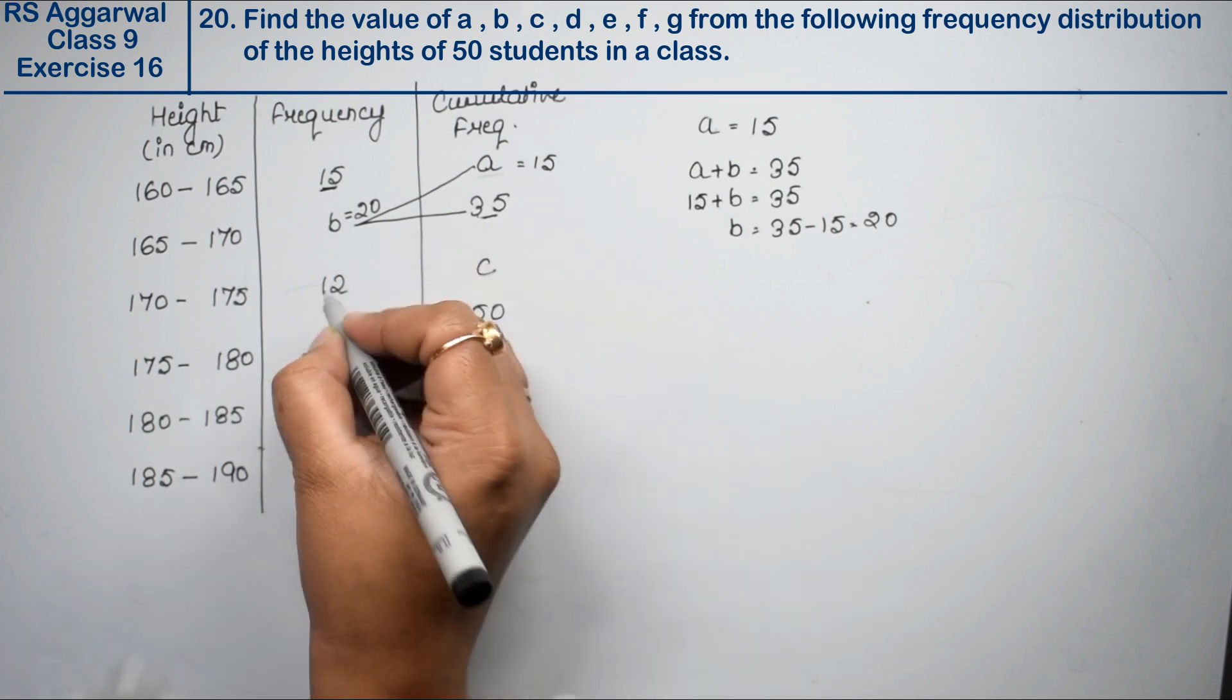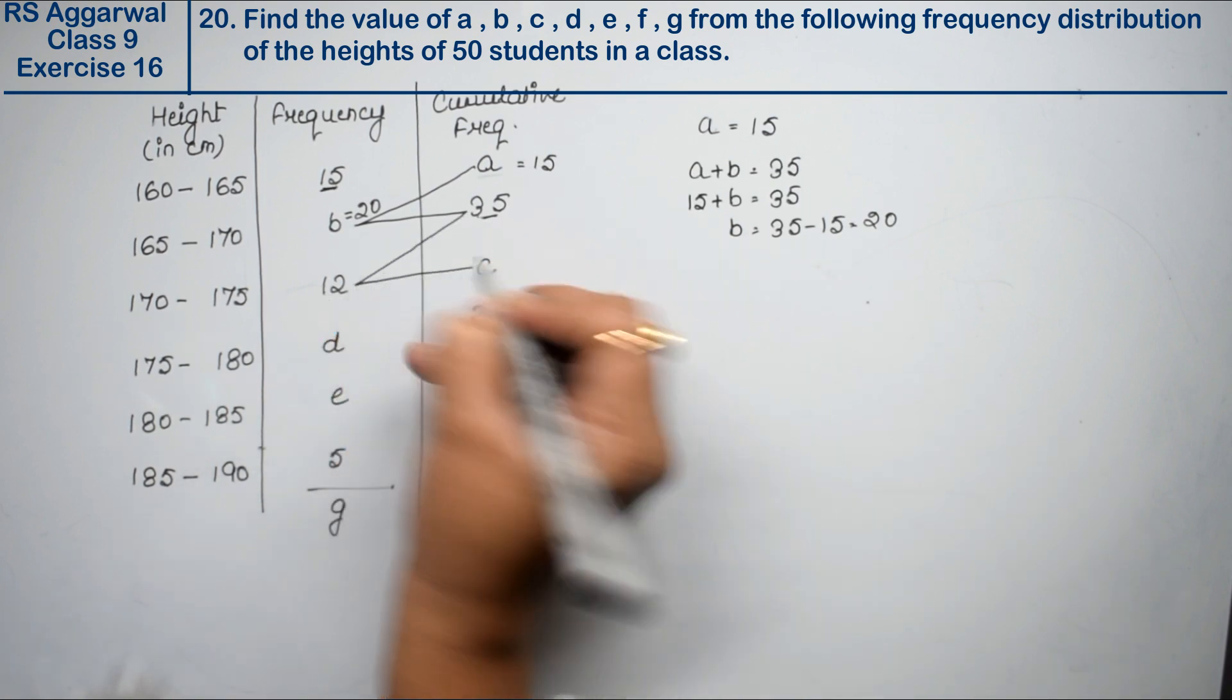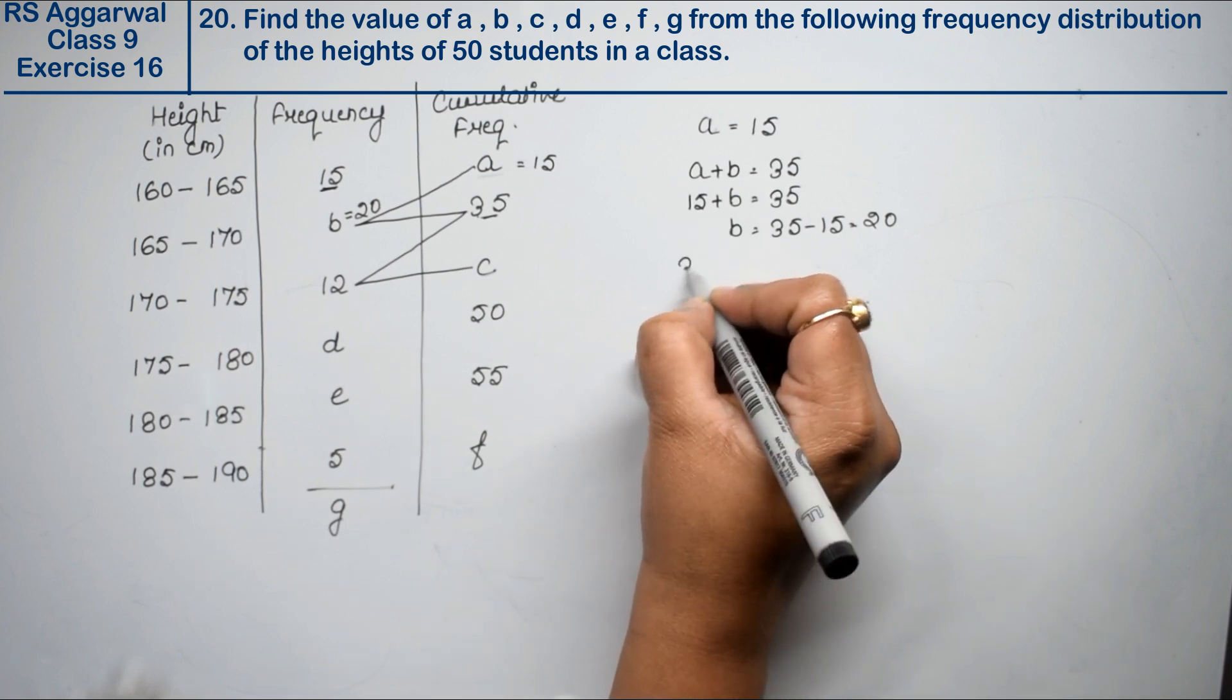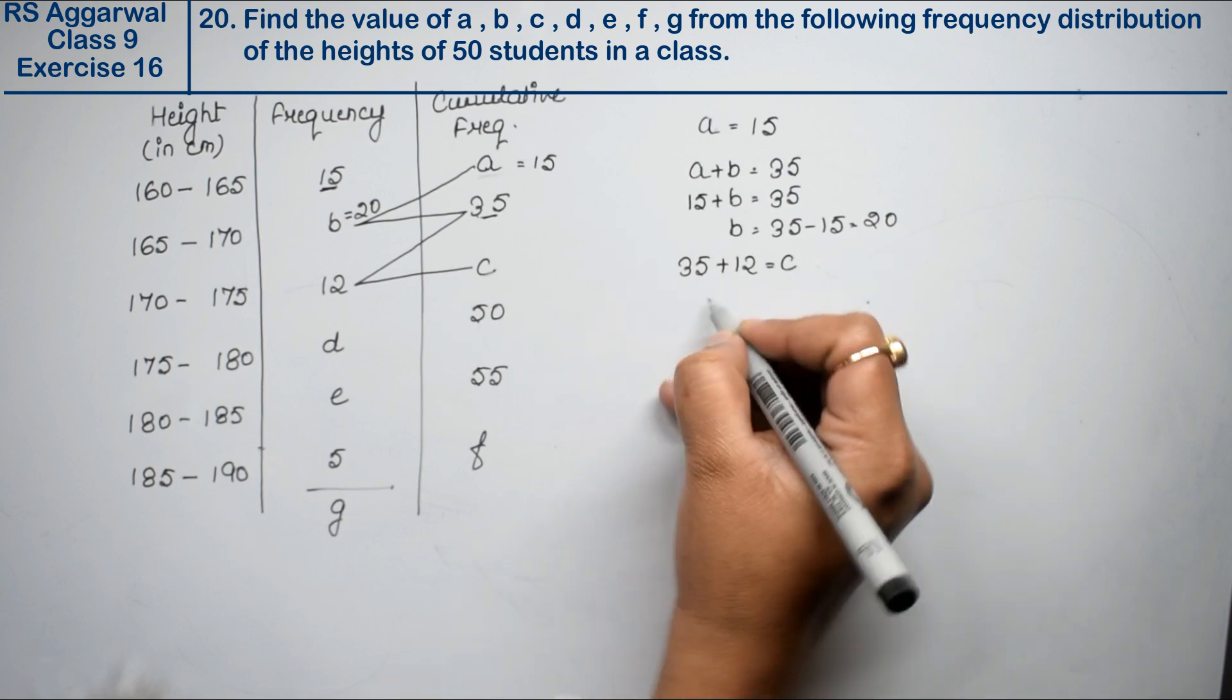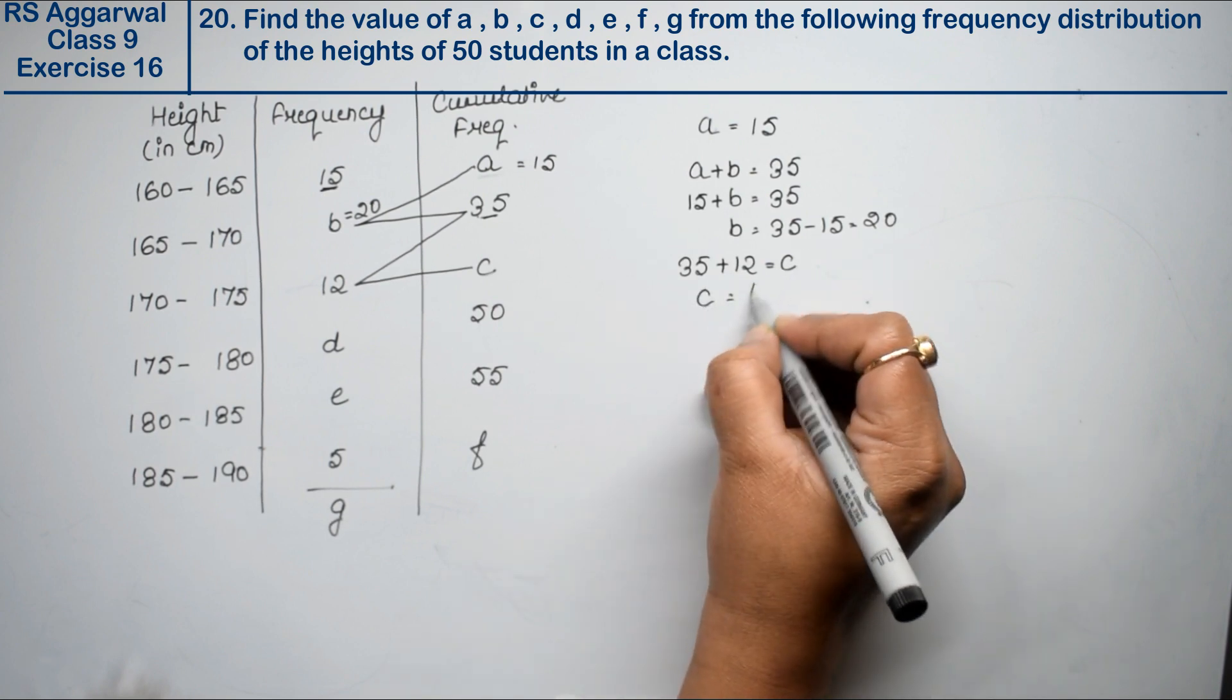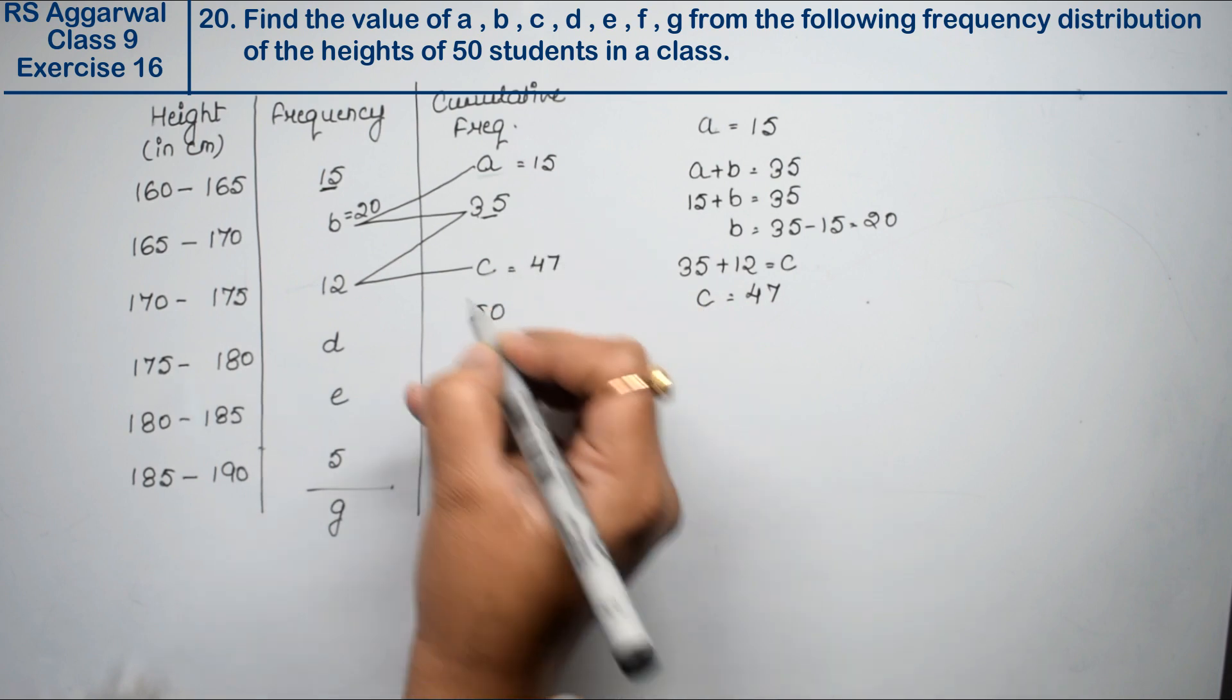Now, this plus this. Then C came here. I had to add them. So see, 35 plus 12 equals to C. So C is how much? 47.